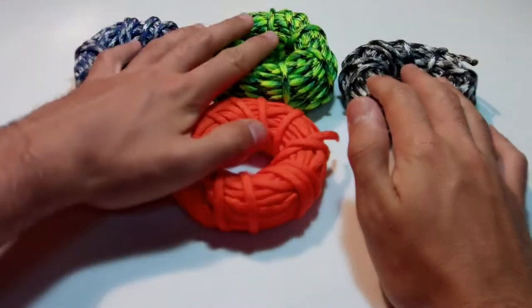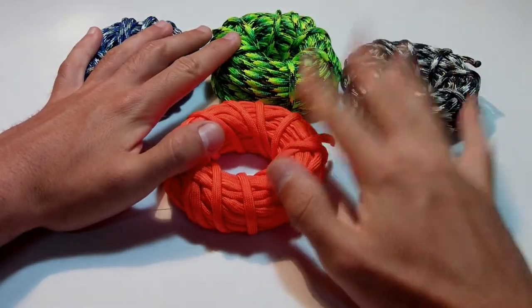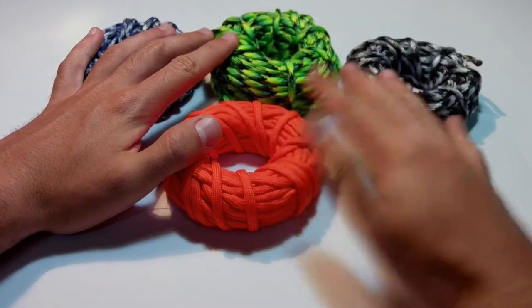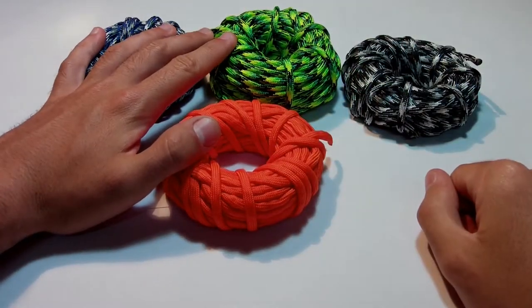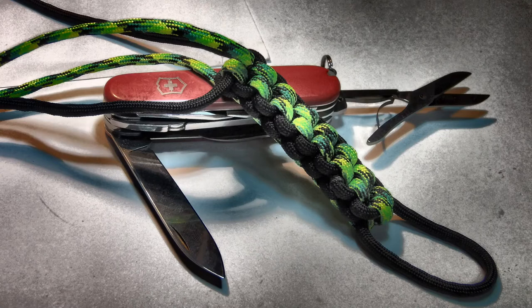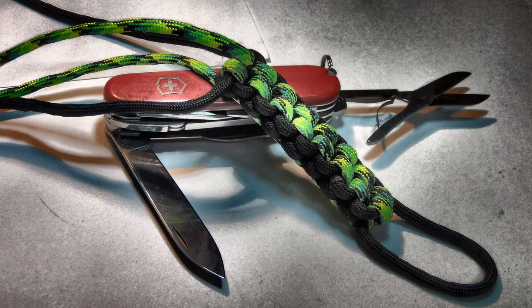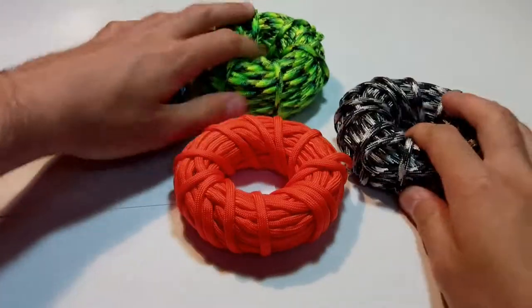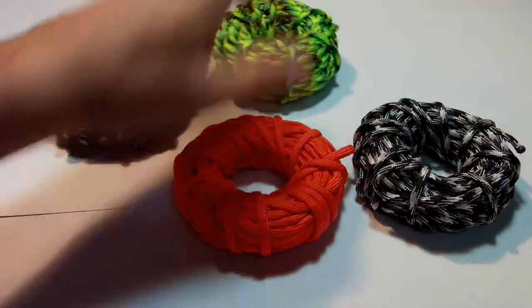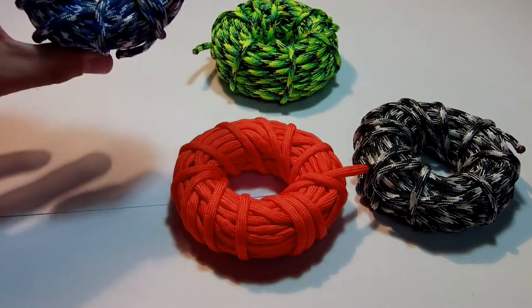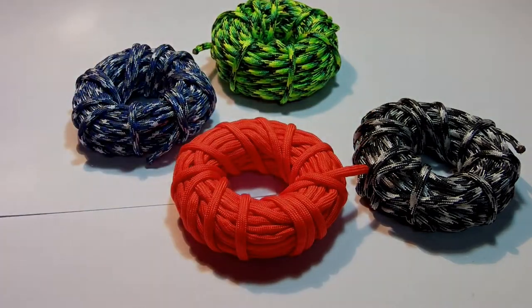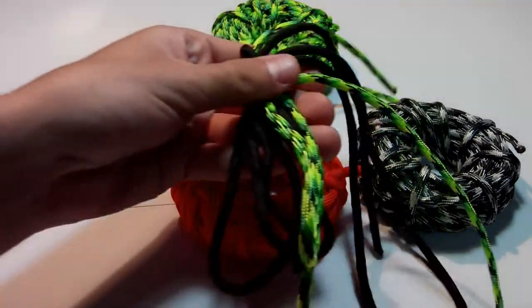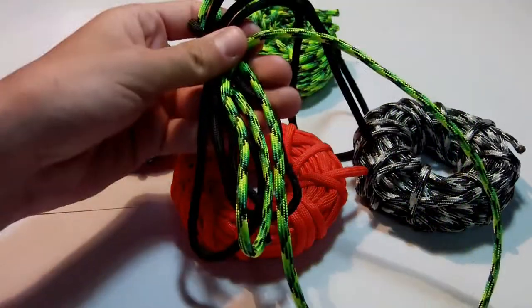What's up guys, we'll be making a two-color square lanyard and this should be the end result. For this project you will need paracord - you have here urban camo, gecko safety orange, and blue camo. For this project I will be using the gecko and some black.